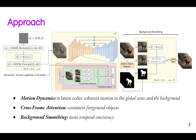Our approach includes three main components. First, we introduce motion dynamics in the latent codes by first performing several DDIM backward steps on a sampled random noise, followed by warpings with predefined motion directions. Then we apply the DDPM forward process and get latents for all frames.